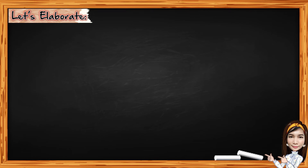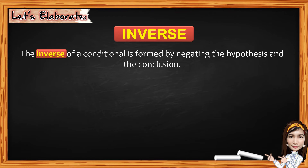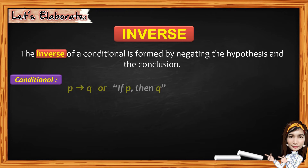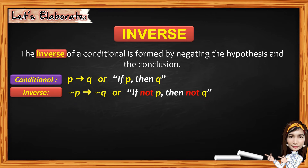Now let's proceed to the next statement, which is the inverse. The inverse of a conditional is formed by negating the hypothesis and the conclusion. For the conditional P implies Q, or if P, then Q, the inverse is if not P, then not Q. The negative words used include: not, no, never, will not, cannot, do not, don't, does not, may not. The negative word depends on the sentence.